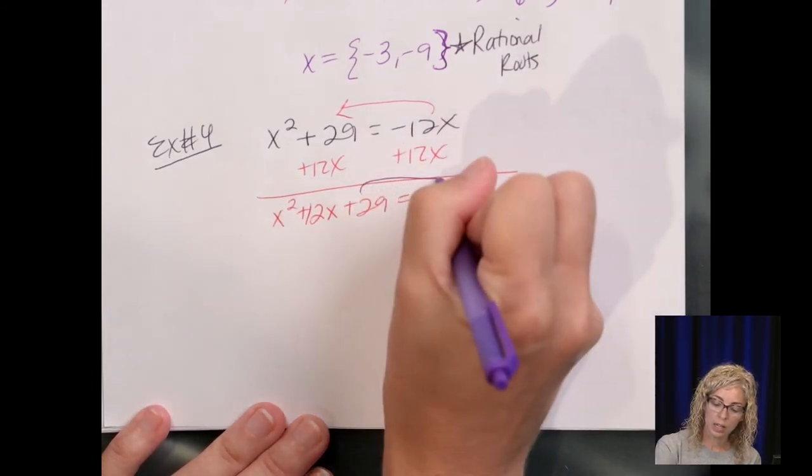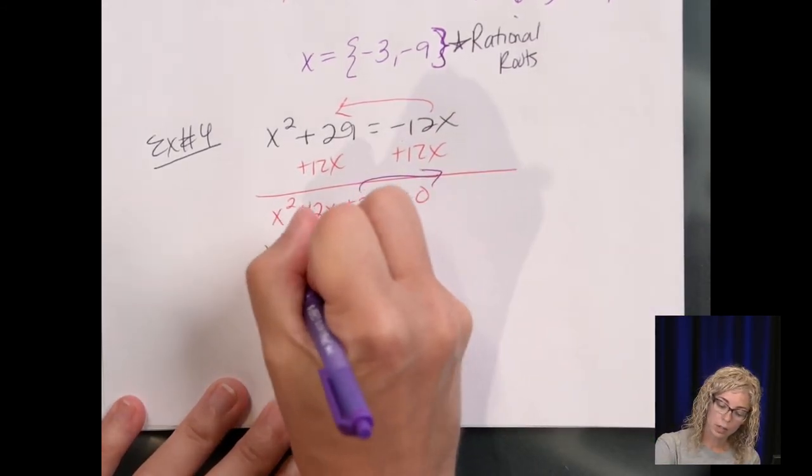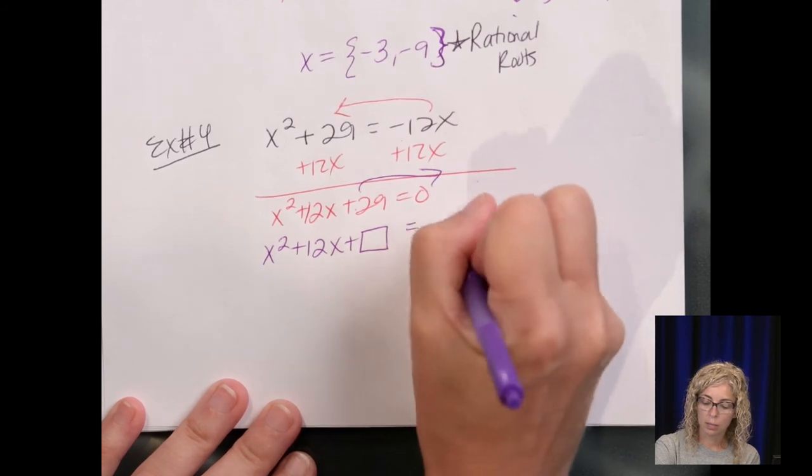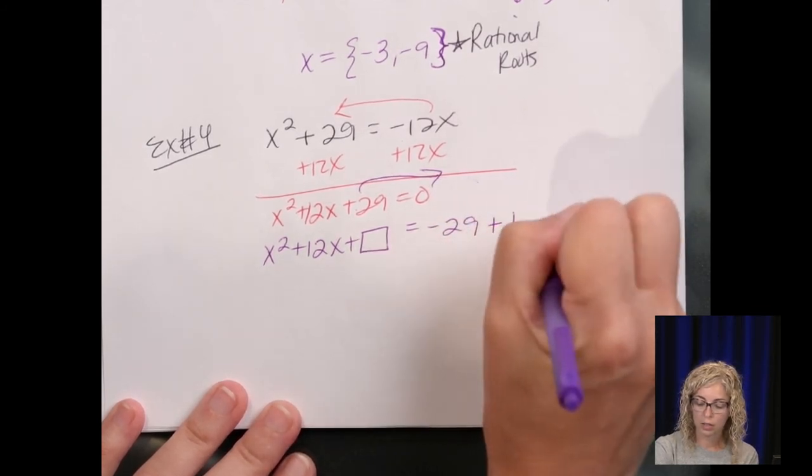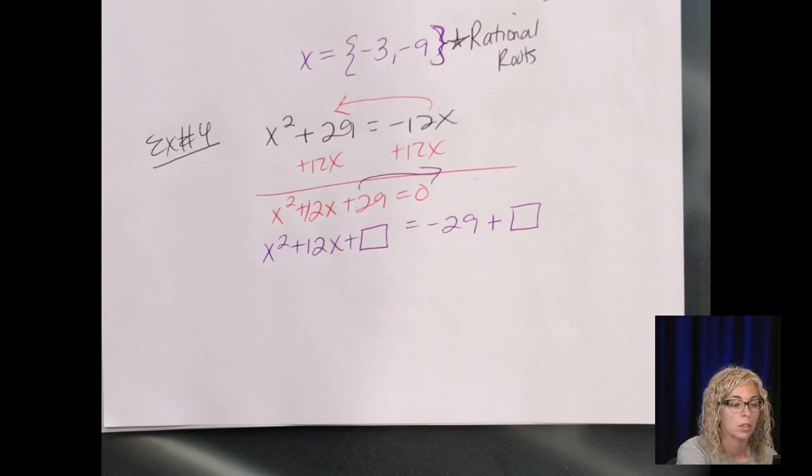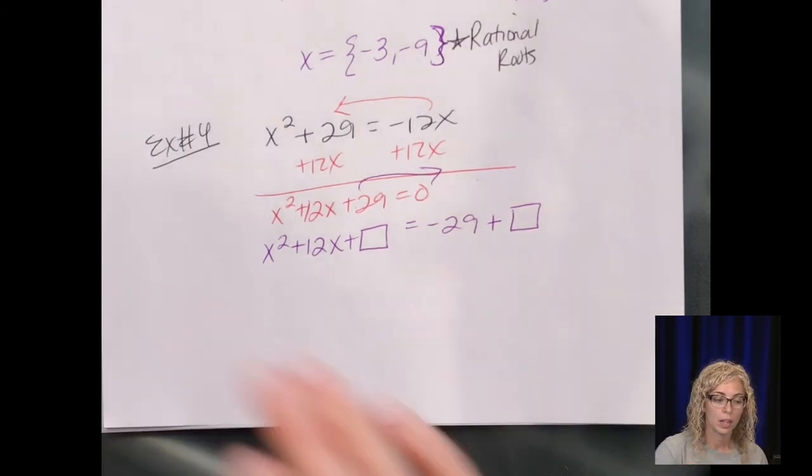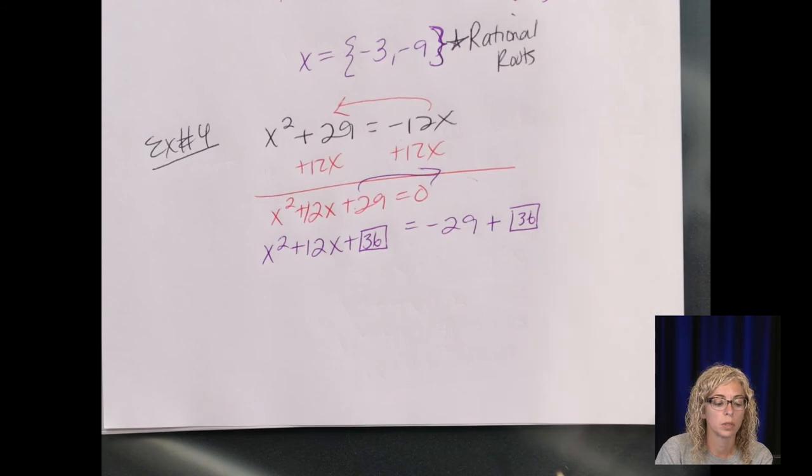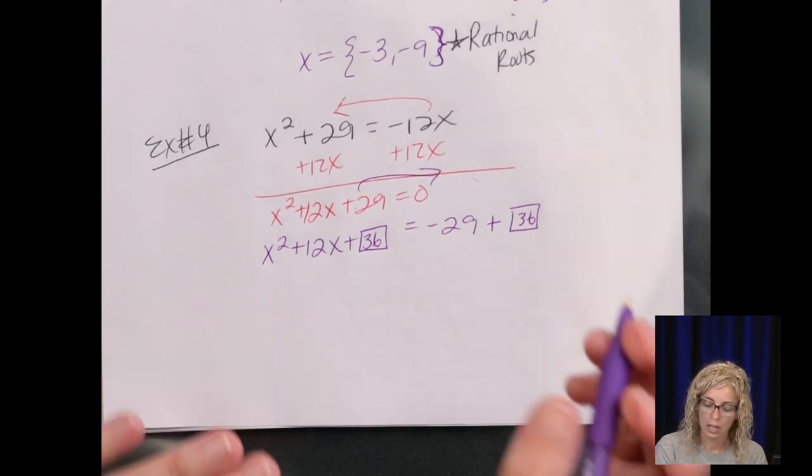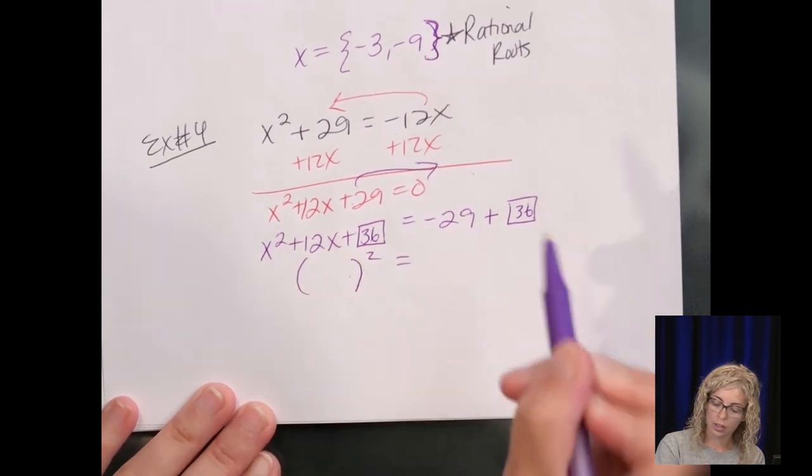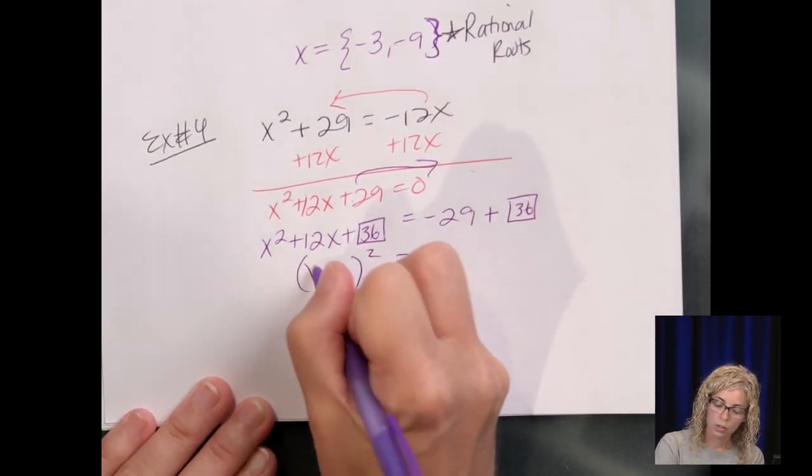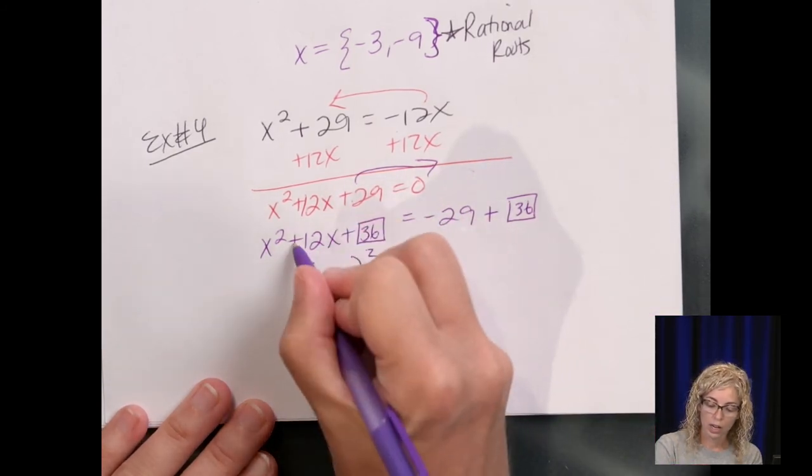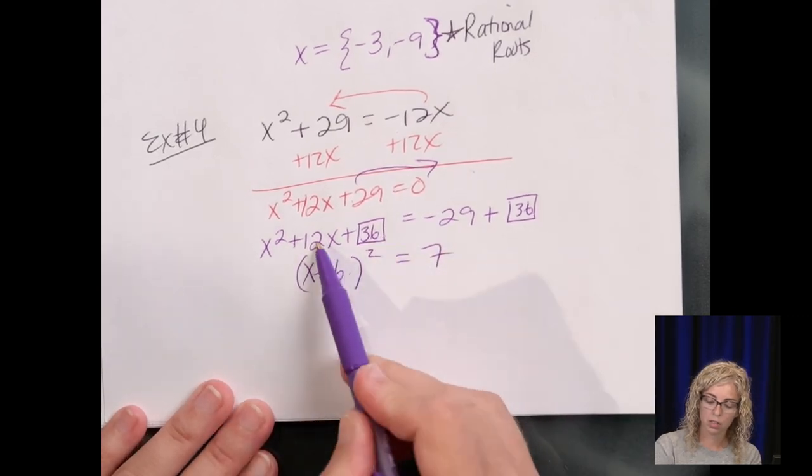But I need that 29 over there so I can add the box. So it becomes x squared plus 12x plus the box. When I move the 29 to the right side, it becomes negative and then plus the box. Half of 12 is 6. 6 squared is 36. So 36 completes the square. And then now rewrite it as a square. 36 minus 29 is 7. So it's going to be x. And then, well, this is the same as we just had in the last example. So the sign in the middle is plus. So plus 6, 6 squared is 36, and 6 plus 6 is 12.